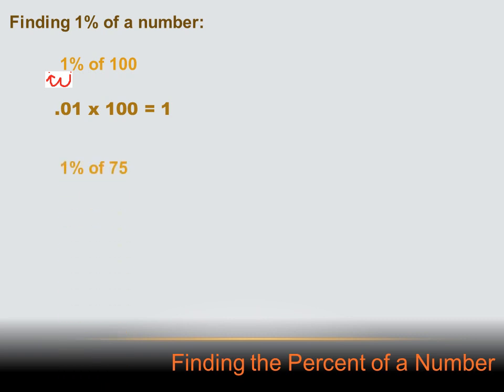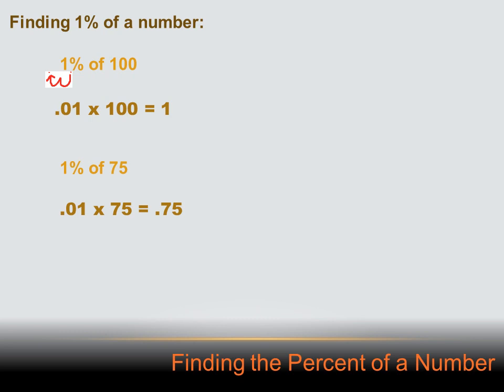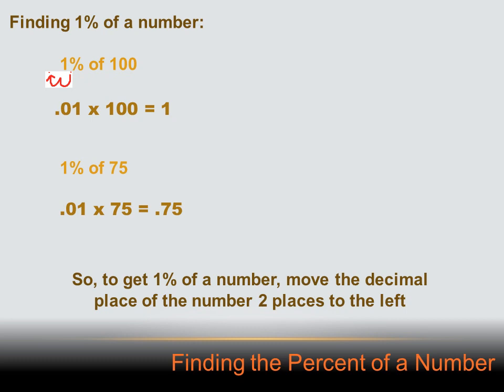Let's try another one: 1% of 75. We could convert 1% to a decimal — 0.01 — and multiply that times 75 to get 0.75. But the other way is to take the 75 and move the decimal two places to the left, and we end up with 0.75. So 1% of 75 is 0.75. There's a rule here: to get 1% of a number, move the decimal place of the number two places to the left.